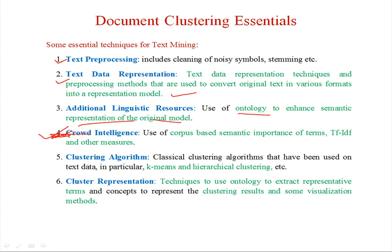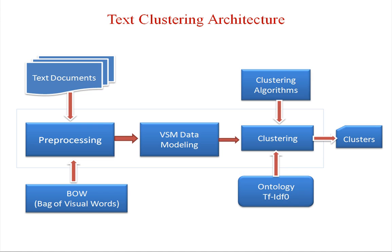Another aspect is cluster representation — how to represent the clusters — for which some visualization techniques are used. In the simple text clustering architecture, text documents first go through preprocessing tasks where we clean the documents, separate words, apply systematic techniques, remove noisy symbols, and convert the entire document as a bag of visual words. In some cases, page-based techniques are also applied.